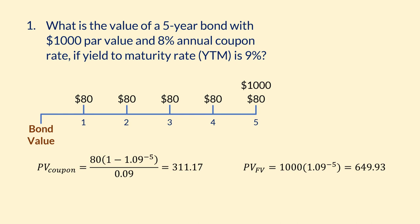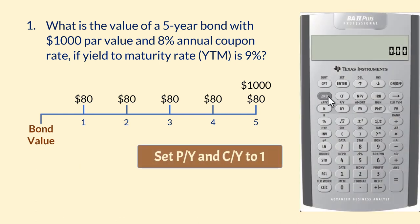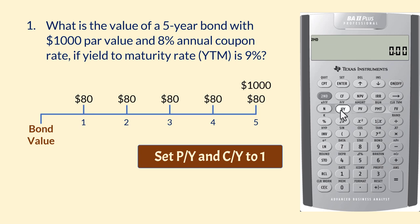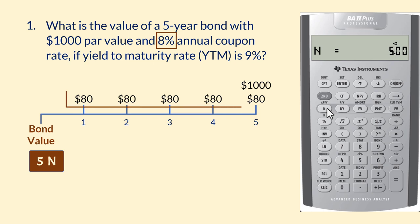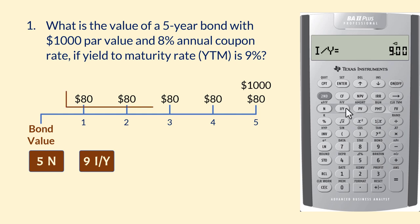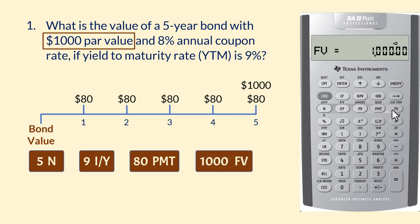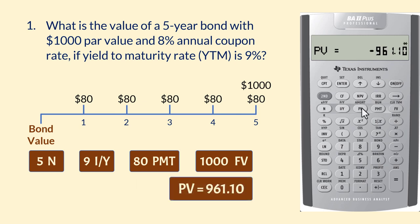We can calculate the bond value using the BA2 Plus calculator as follows. Press 2nd, P/Y, then press 2nd and Clear Work 3 times. This will set both P/Y and C/Y to 1. Alternatively, you can press 2nd, P/Y, 1, Enter, then 2nd, Quit. Since we have 5 years, we input 5N. Note that 8% is the coupon rate used to calculate the interest amount, so our interest rate here is the 9% yield, and we enter 9 I/Y. 80 PMT for the periodic payment, 1,000 FV for the face value, and we compute PV, which gives 961.10.